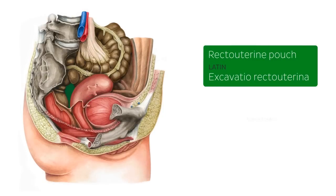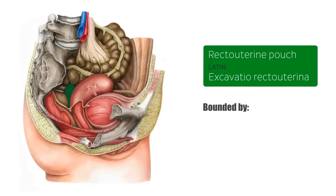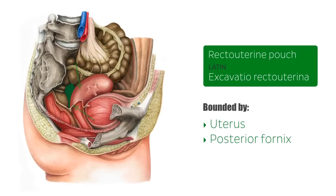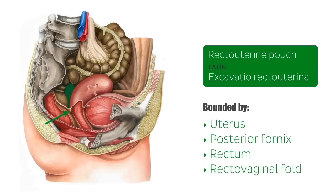This recess is also known as the pouch of Douglas. The recto-uterine pouch is bounded anteriorly by the uterus and the posterior fornix of the vagina, while posteriorly it is bounded by the rectum, and inferiorly by the recto-vaginal fold.